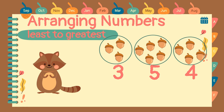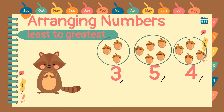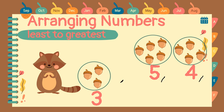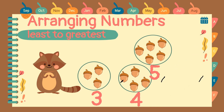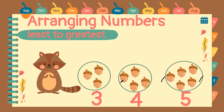Now let's have this example. Mr. Squirrel loves acorns. The acorns are divided into 3 groups. The first group has 3 acorns, the second group has 5 acorns, and the third group has 4 acorns. This time, let's arrange the following number of acorns from least to greatest. The least number is number 3. Next, after 3, we have 4. And the greatest number is 5.